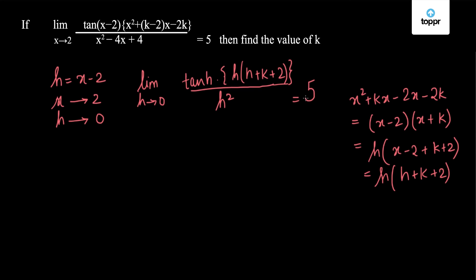I will write this as limit h tends to 0 of tan h upon h times limit h tends to 0 of h times (h + k + 2) upon h equals 5. This limit we know is equal to 1.